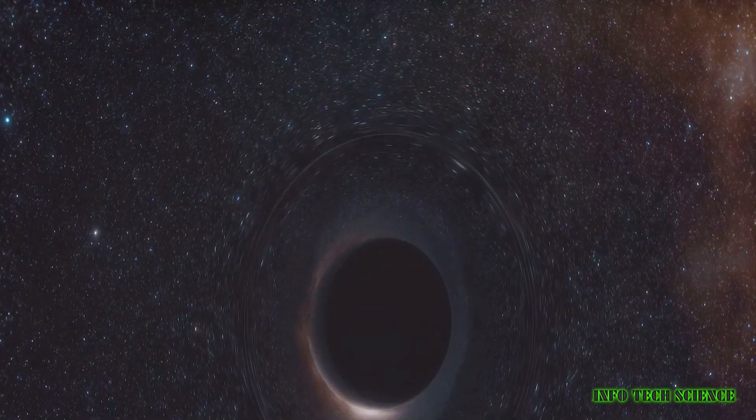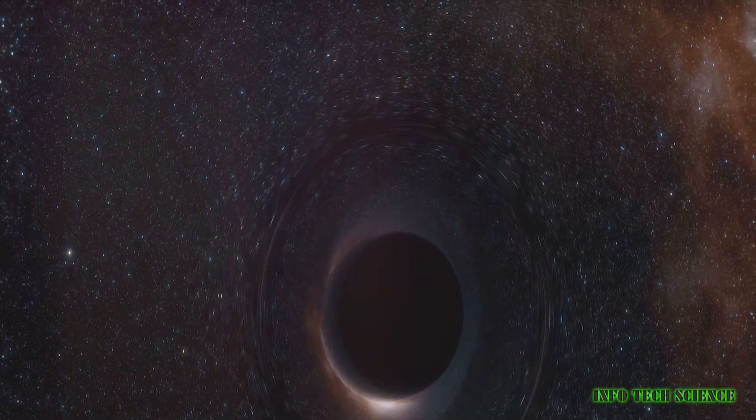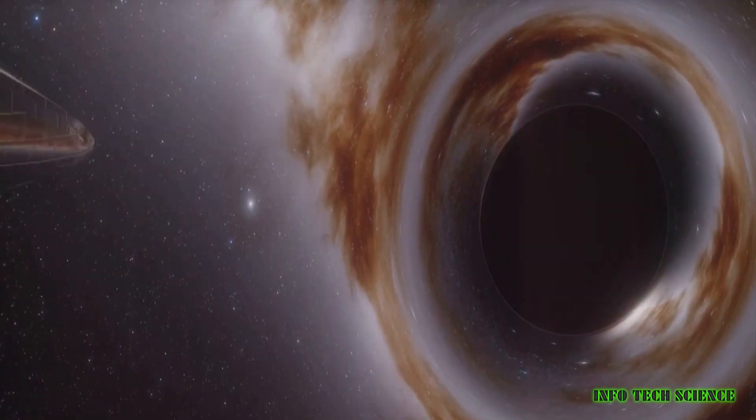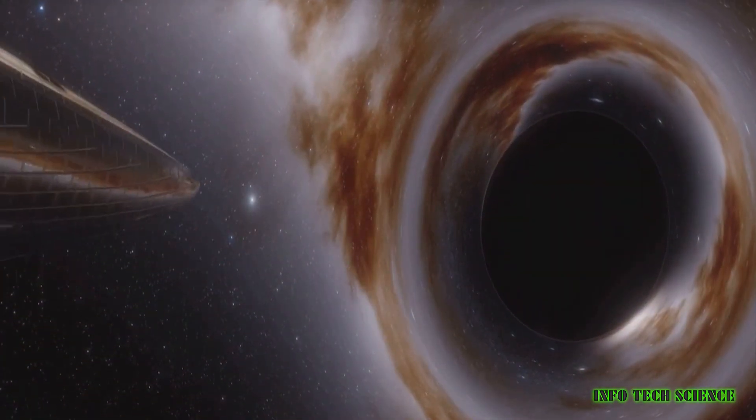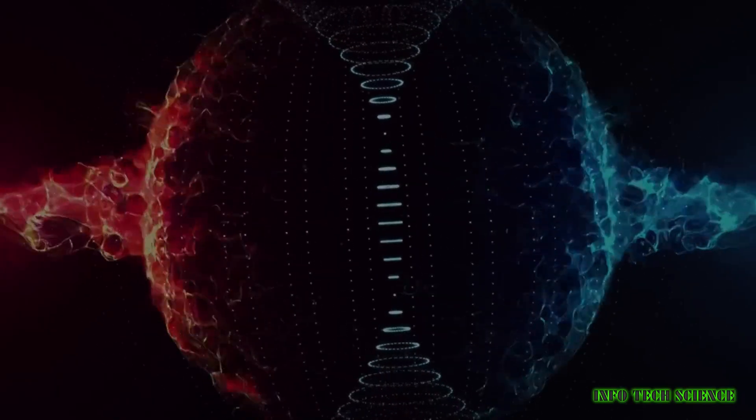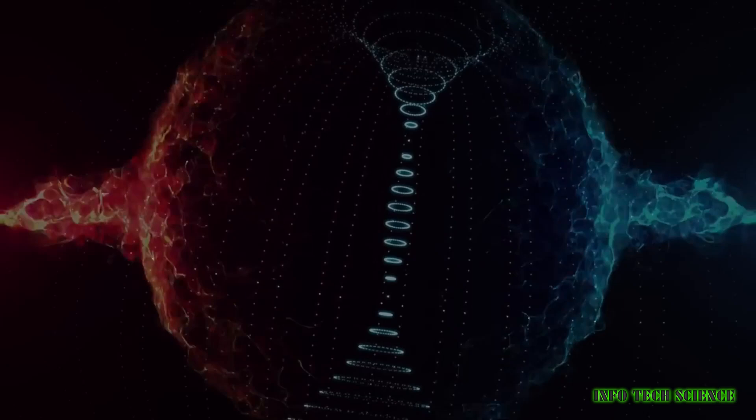For instance, a black hole with the mass of our sun would take a staggering 10 to the power of 64 years to evaporate. On the other hand, a supermassive black hole with a mass of 100 billion solar masses would take an almost incomprehensible 2 times 10 to the power of 100 years to evaporate.